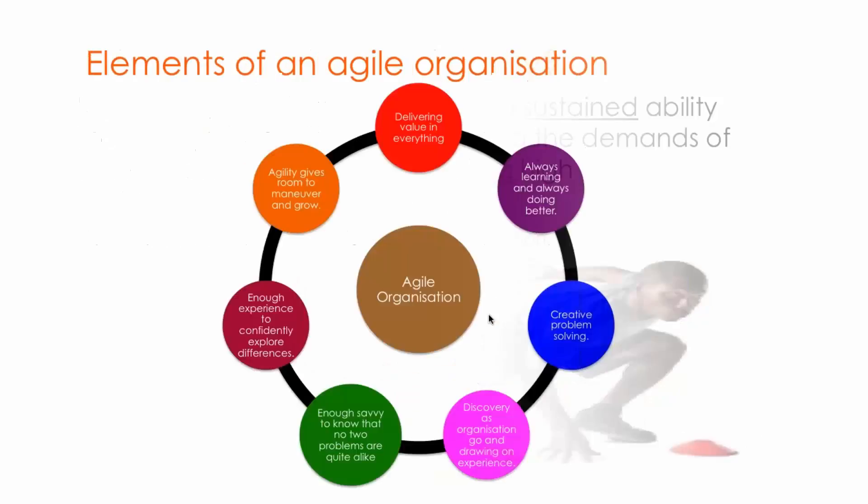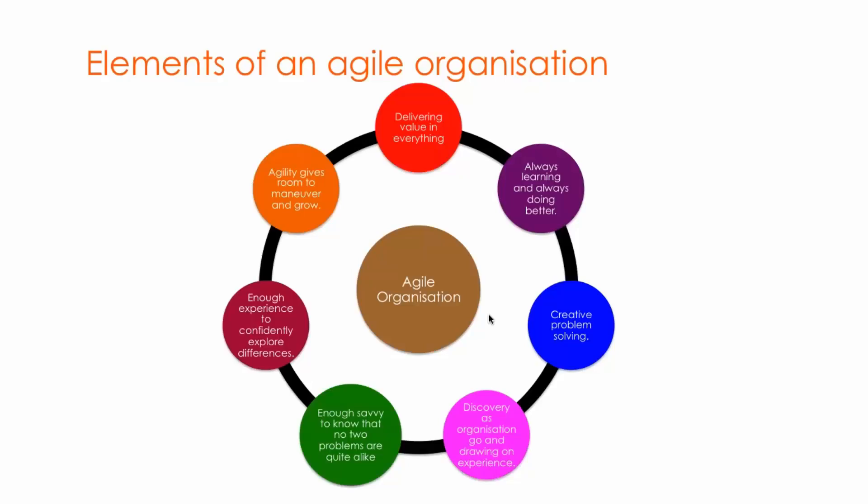Here are the elements of organizational agility. An agile organization is able to deliver value in everything it does. They always learn and do better — every opportunity is a learning opportunity. They have creative problem-solving capability; for every change, they are able to discover and draw from experience. They have enough survey to know that no two problems are quite alike, and enough experience to confidently explore the differences, enabling them to quickly and efficiently respond to changes within the organization.